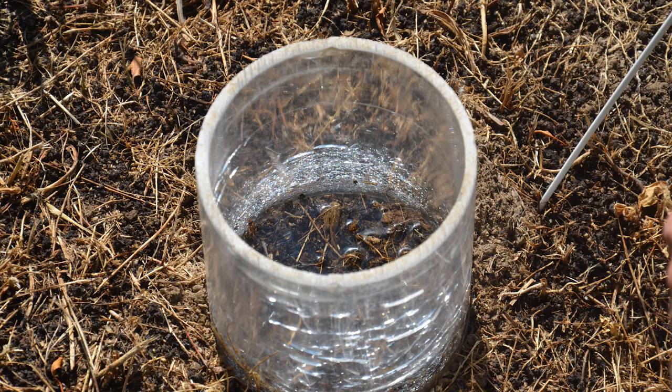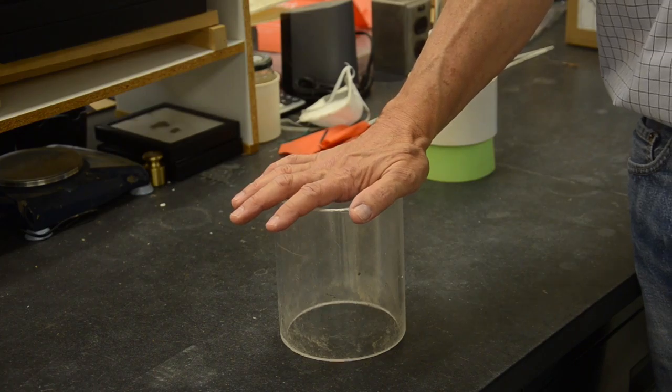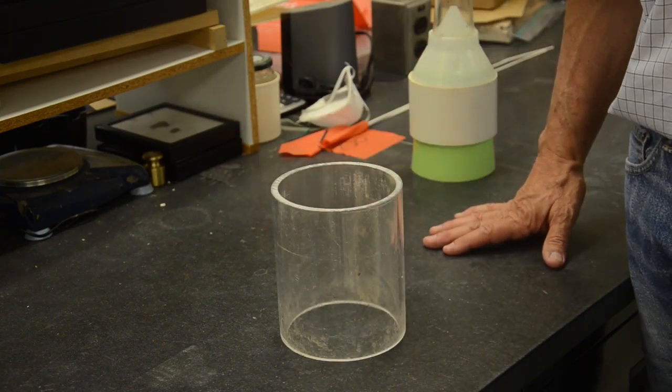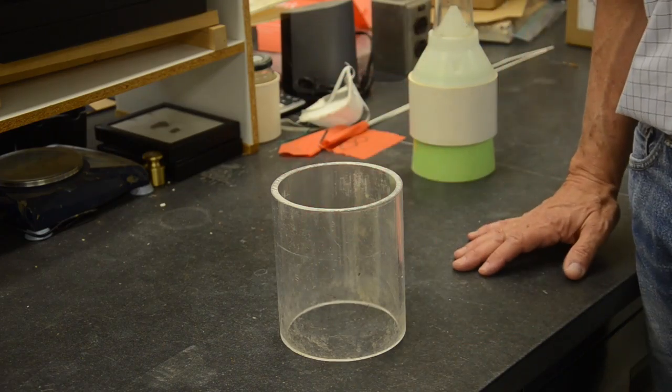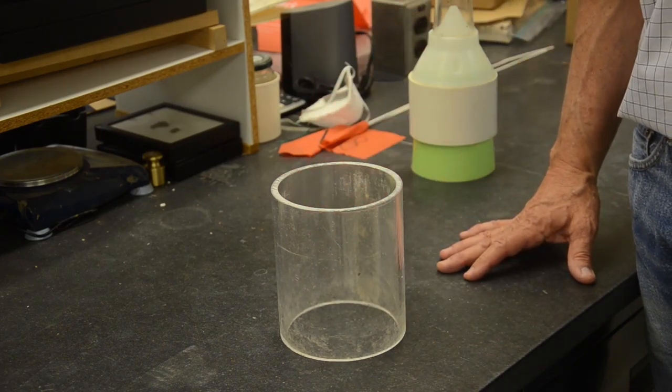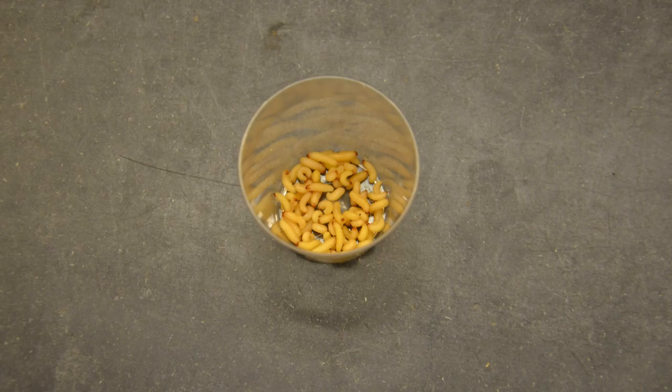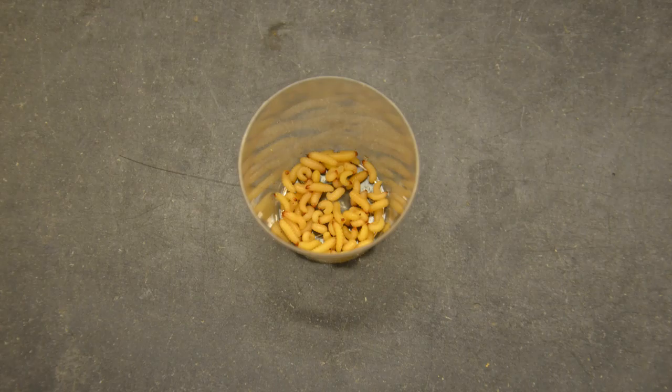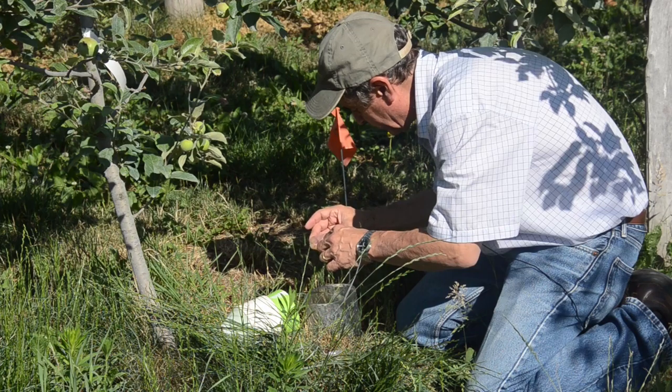We do this in sites where the orchard has been inoculated with nematodes, so there should be some already present in the soil, and other places where it has not been treated - the controls. What we do is I collect Plum Curculio larvae from the colony and I drop 10, just to get a good even number, into each arena.